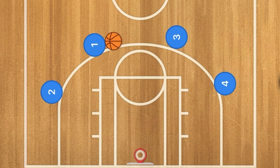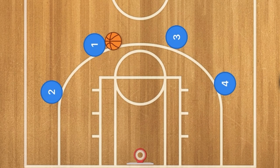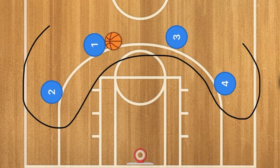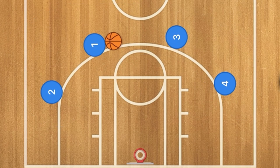Hello everybody, my name is Alan from Al's Basketball Training and today I'm going to show you another 4 on 4 basketball play that you can use in your next 4 on 4 game. We're going to do a 4 out, and we're going to be doing two plays today: one called a pass and screen away, and a pass and screen for.